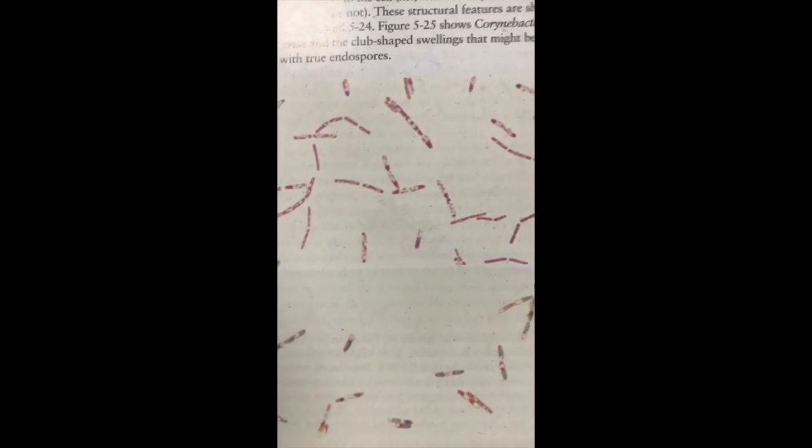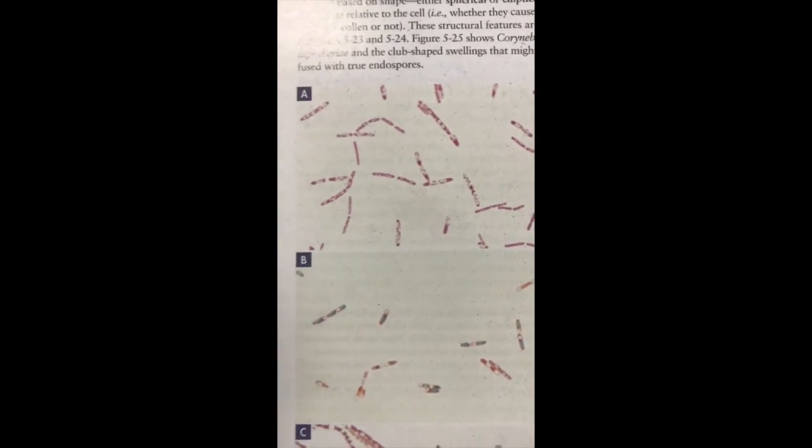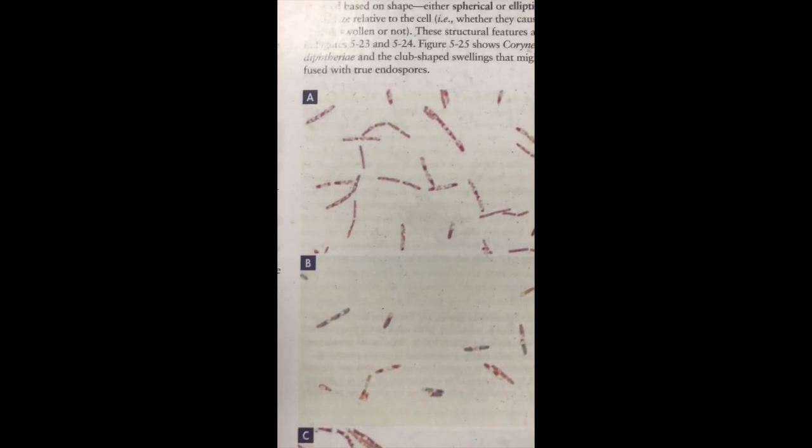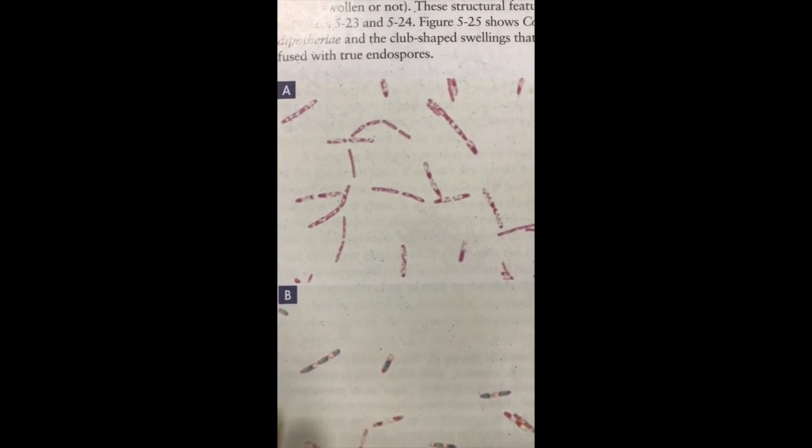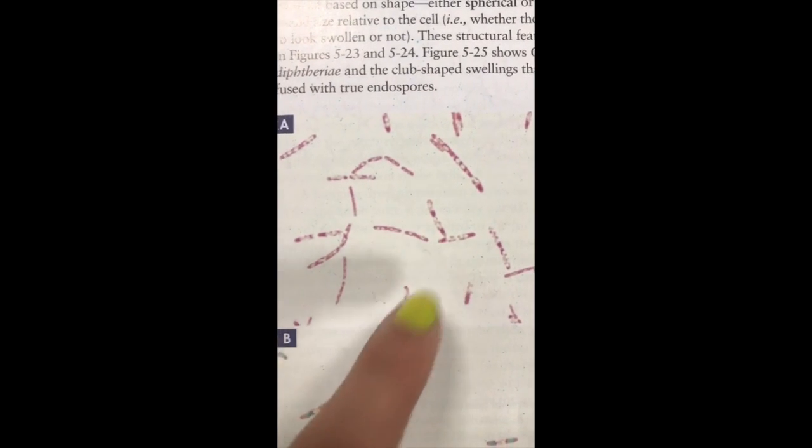4A here. Notice that this is an example of vegetative cells. There are no spores there, even though you can mistakenly think these tiny little green dots here are.